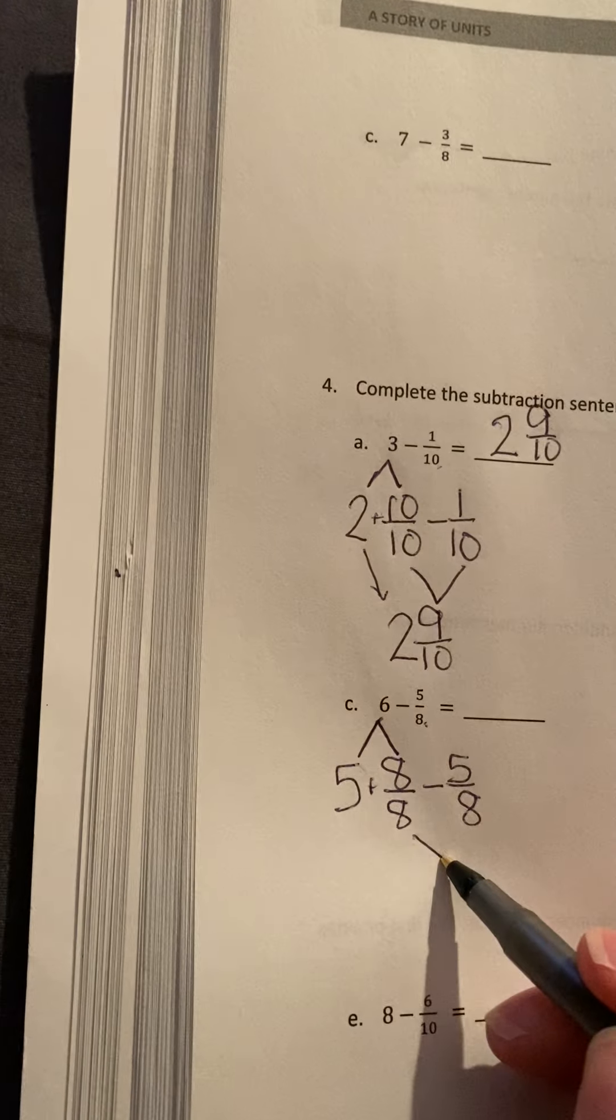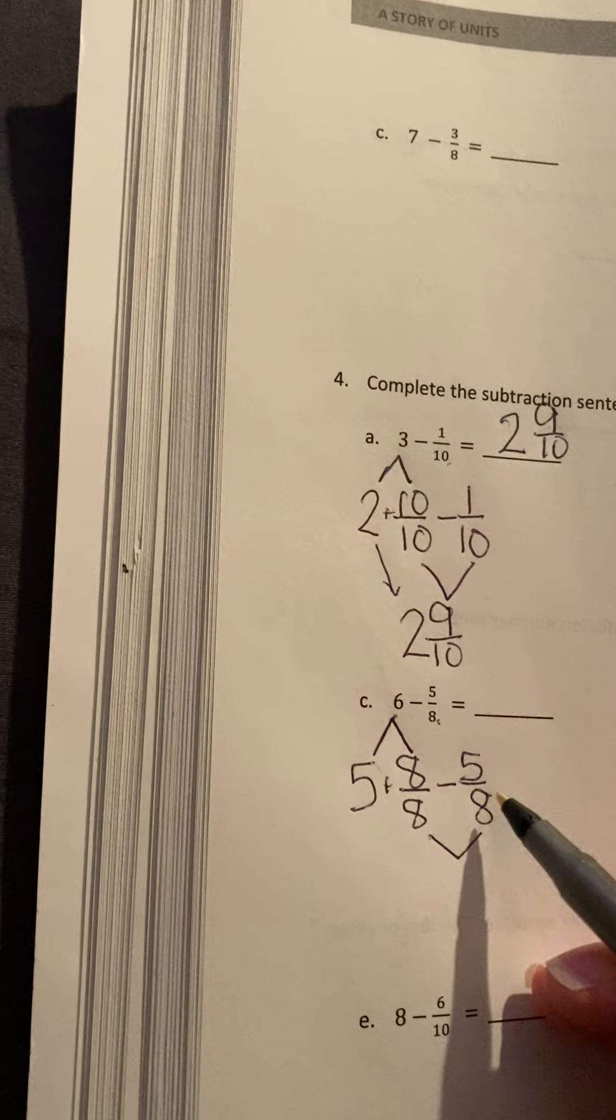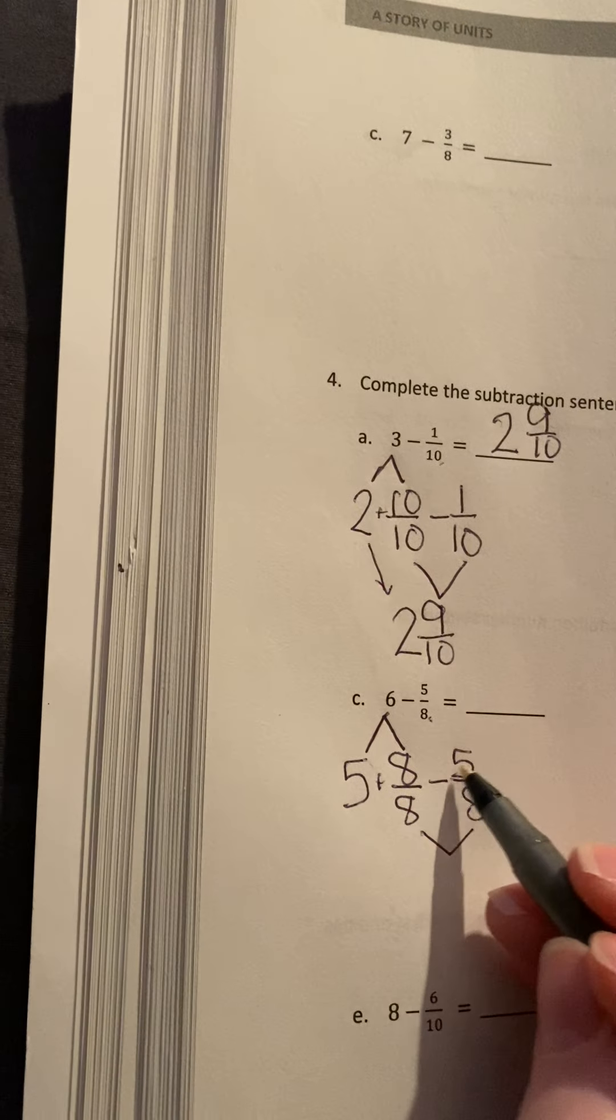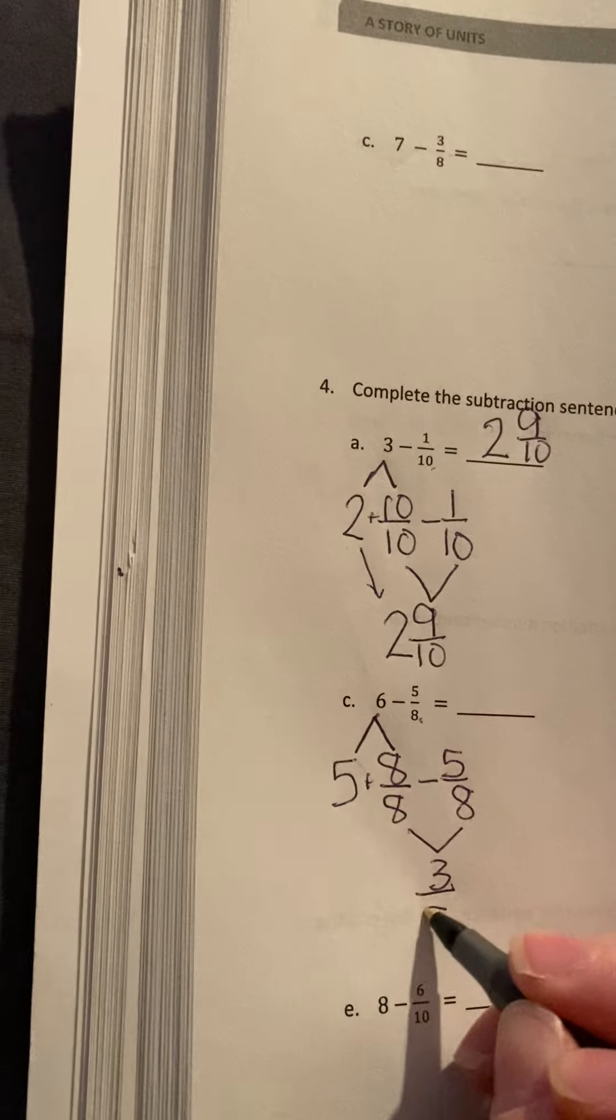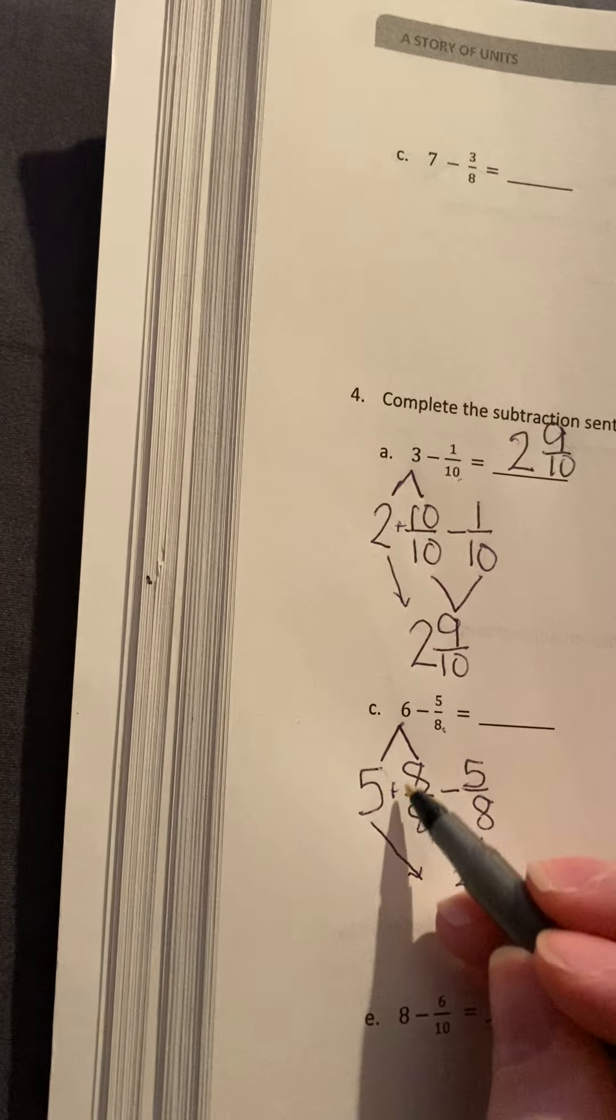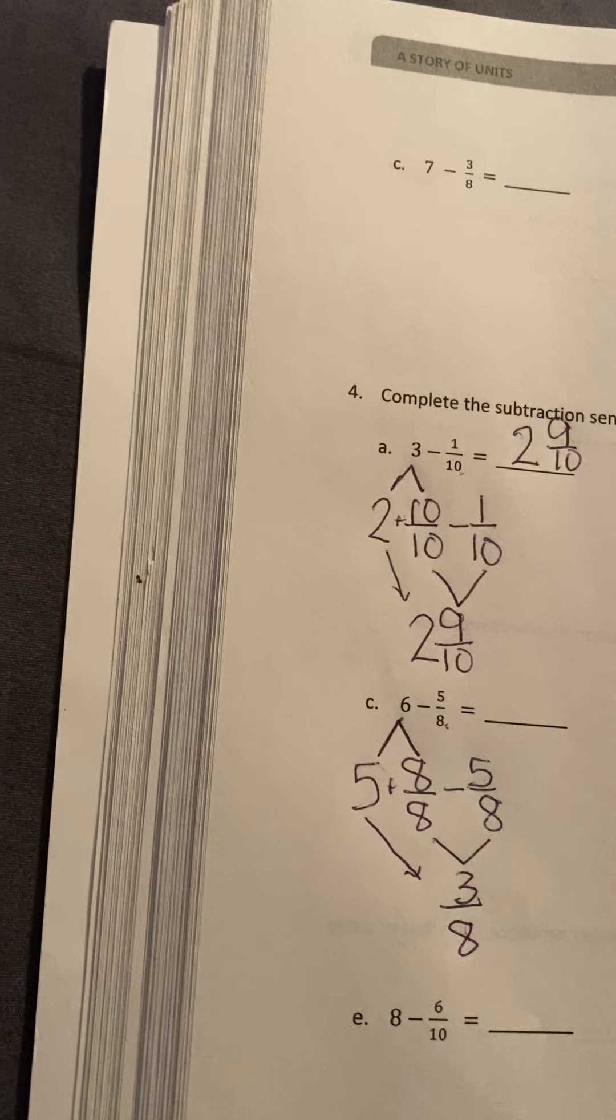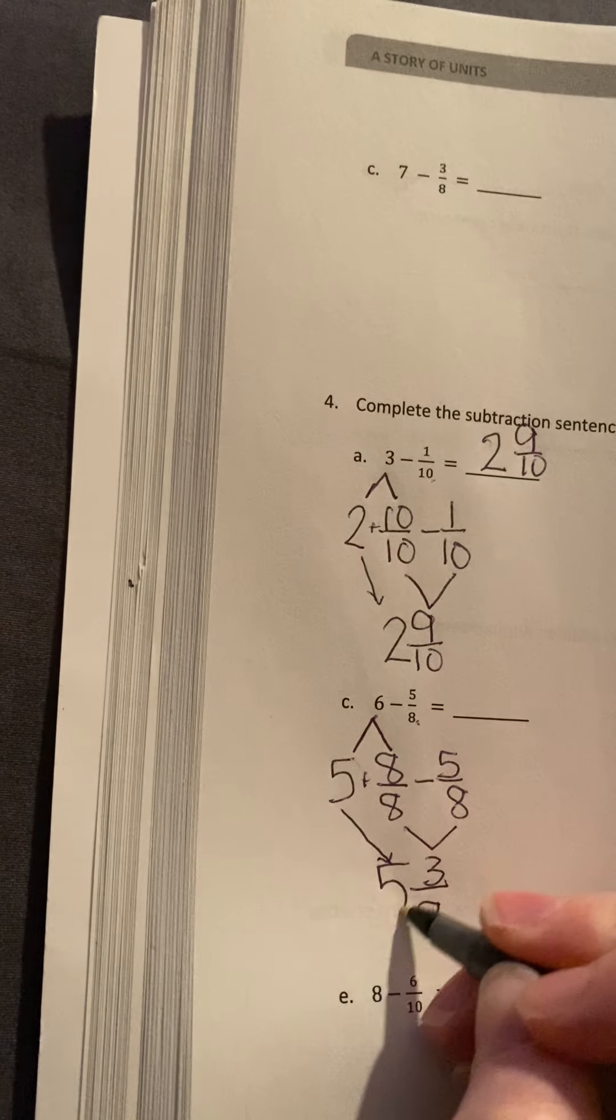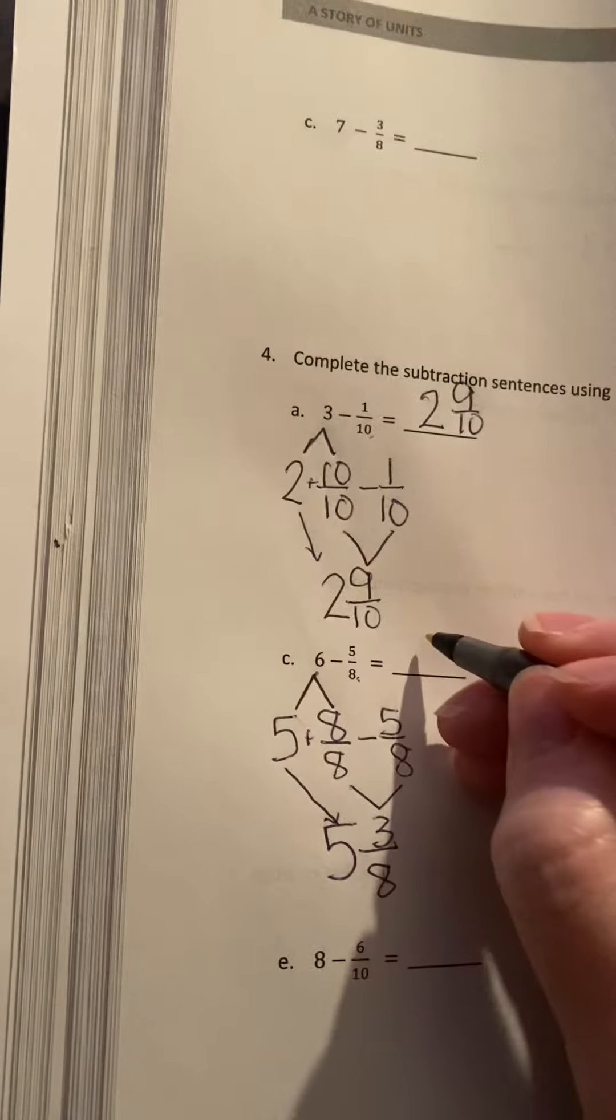So I'm going to do my fractions. I have 8 eighths minus 5 eighths. Well, 8 minus 5 is 3. Denominator stays the same, 8. And then I just bring down my 5 because remember, just pretend you're taking out the plus sign when you have that there. So I have 5 and 3 eighths is my answer.